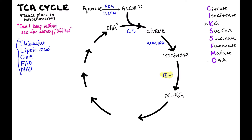Next, we go from alpha-ketoglutarate to succinyl-CoA. This requires the enzyme alpha-ketoglutarate dehydrogenase, which is also a 'tender-loving care for Nancy' enzyme, along with pyruvate dehydrogenase. Succinyl-CoA is four carbons. So in this process of going from isocitrate to alpha-ketoglutarate to succinyl-CoA, we went from six to five to four carbons.